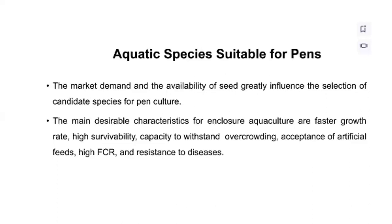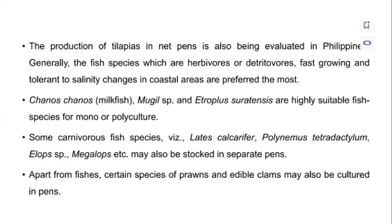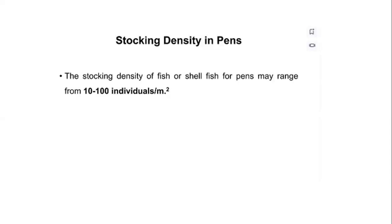Regarding which species we can culture in pen, the market demand and availability of seed greatly influence the selection of candidate species. The main desirable characters in pen aquaculture are: faster growth rate, high survival ability and capacity to withstand overcrowding, acceptance of artificial feed, better FCR, and resistance to diseases. We can culture air-breathing catfish, tilapia, and prawn. The principal fish species cultured in South Asia, the Philippines, and China are milk fish and other carps. Carps are also widely used in Bangladesh and Egypt. Milk fish can be cultured as monoculture, culturing only one species, or polyculture, where more than one species is stocked.